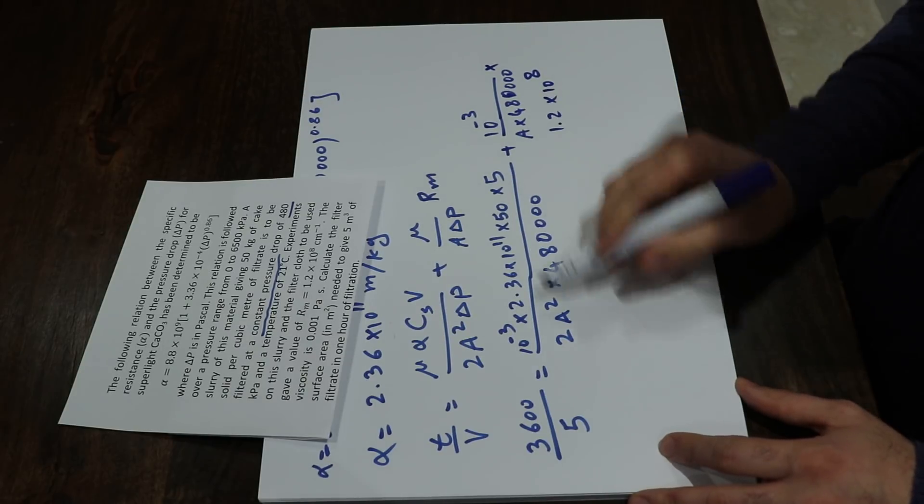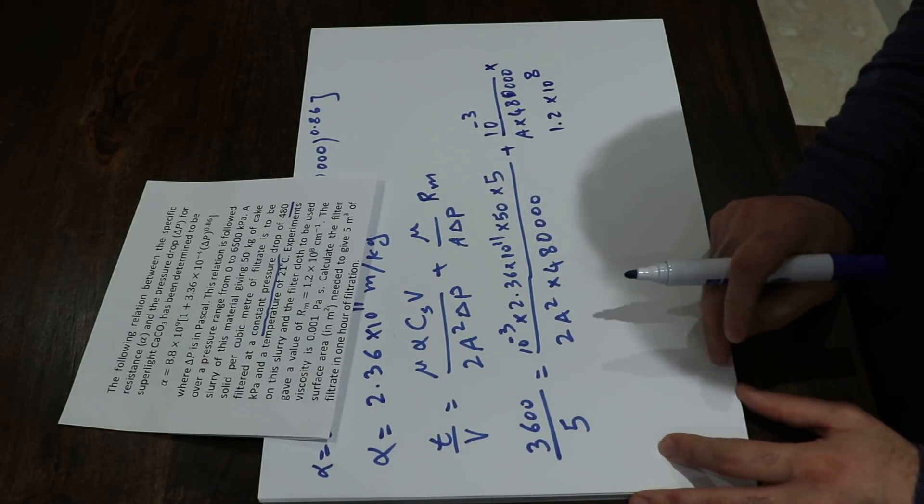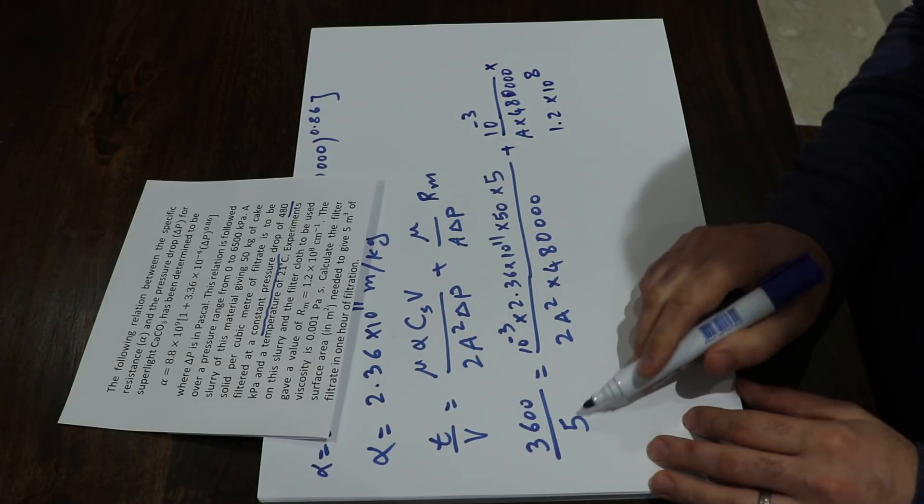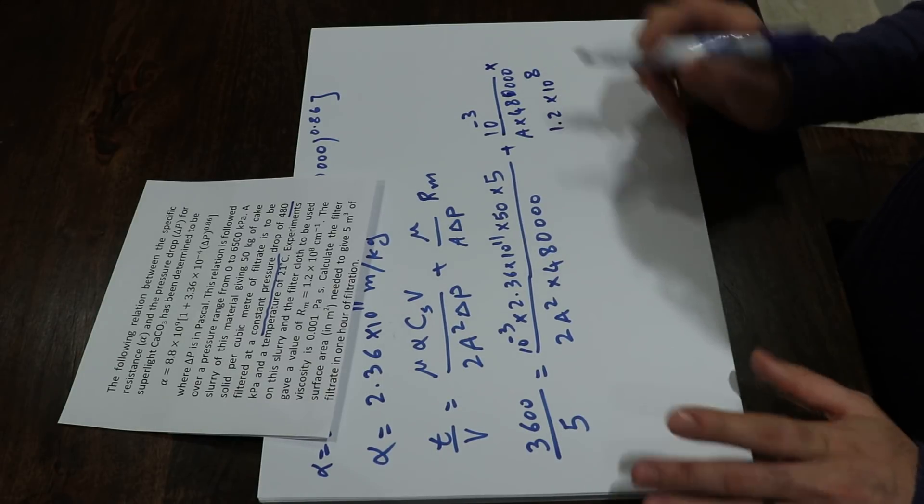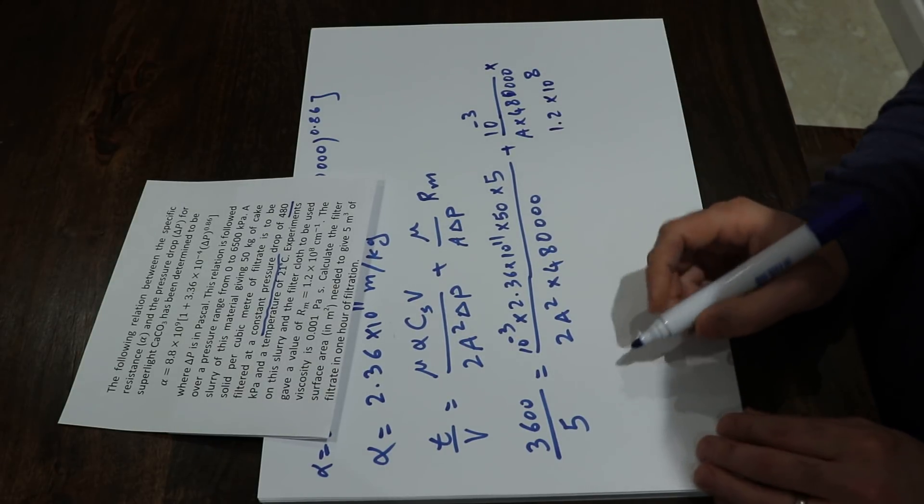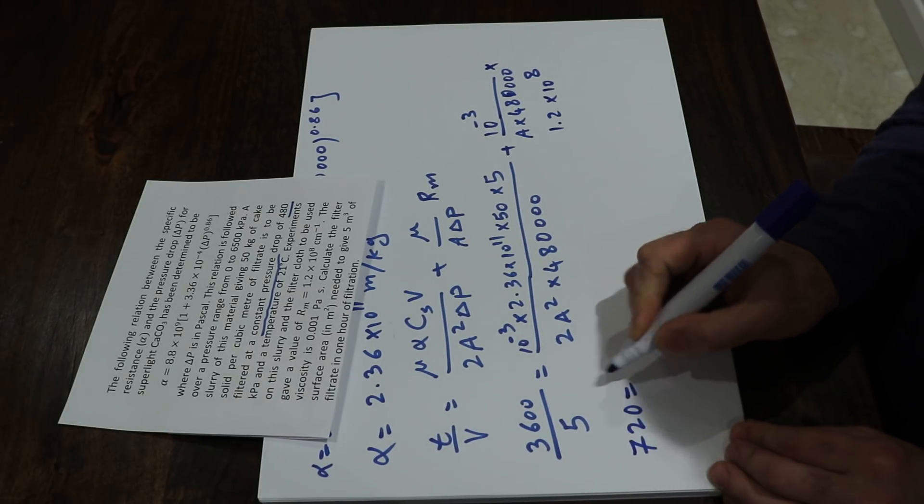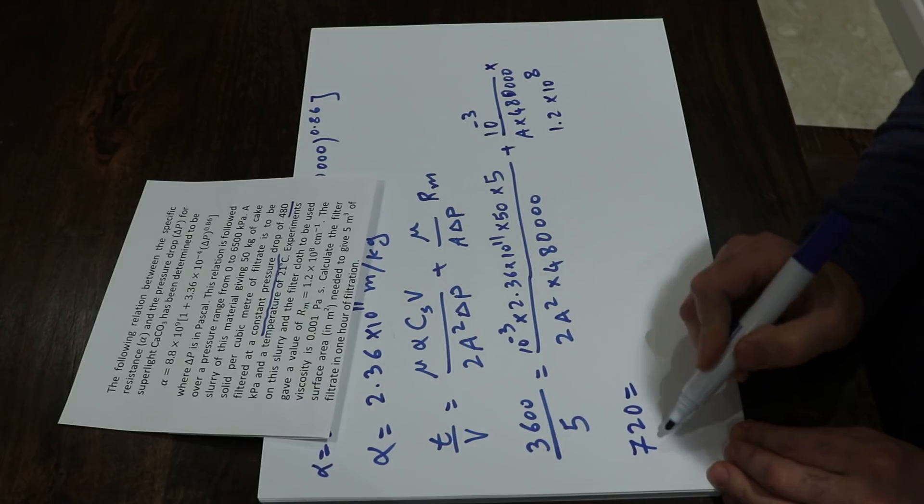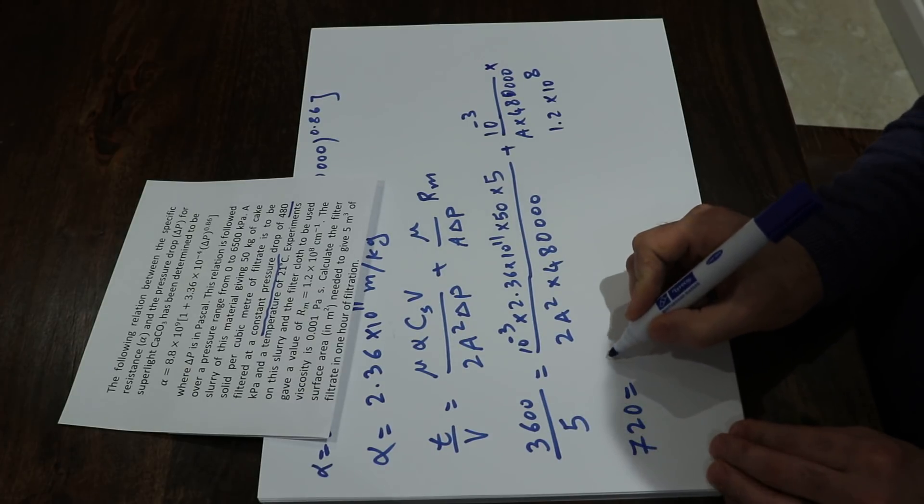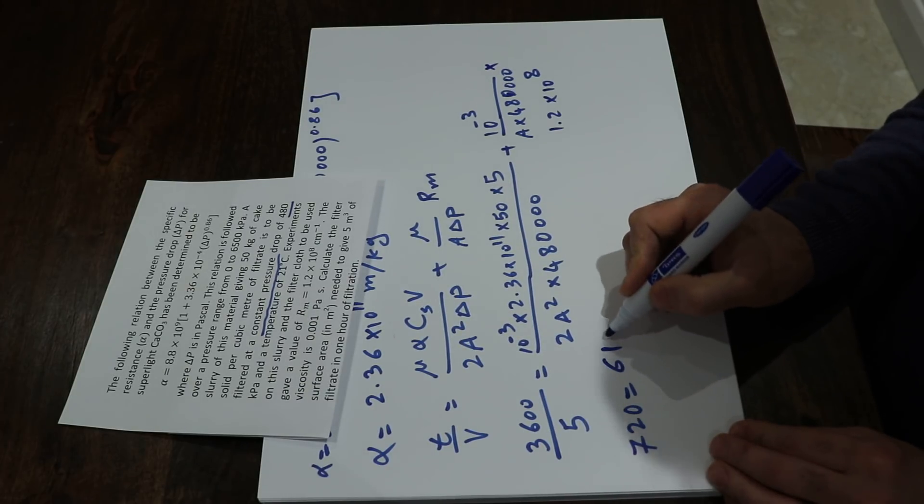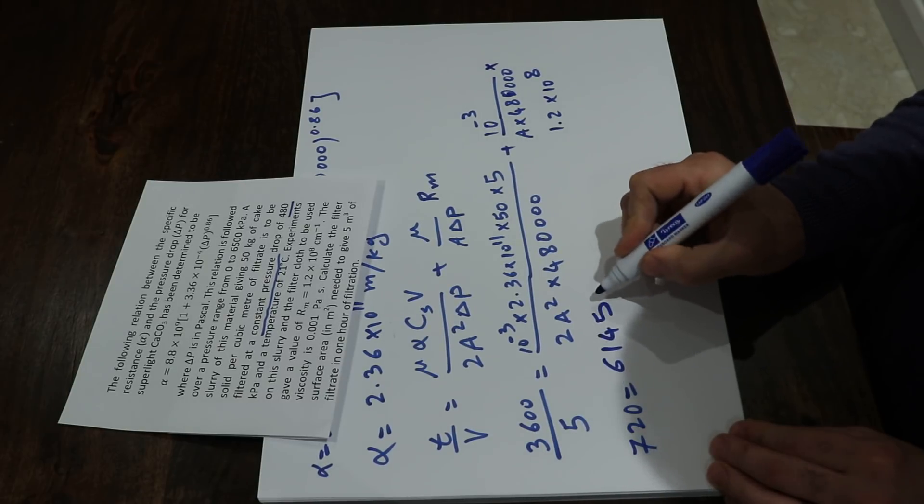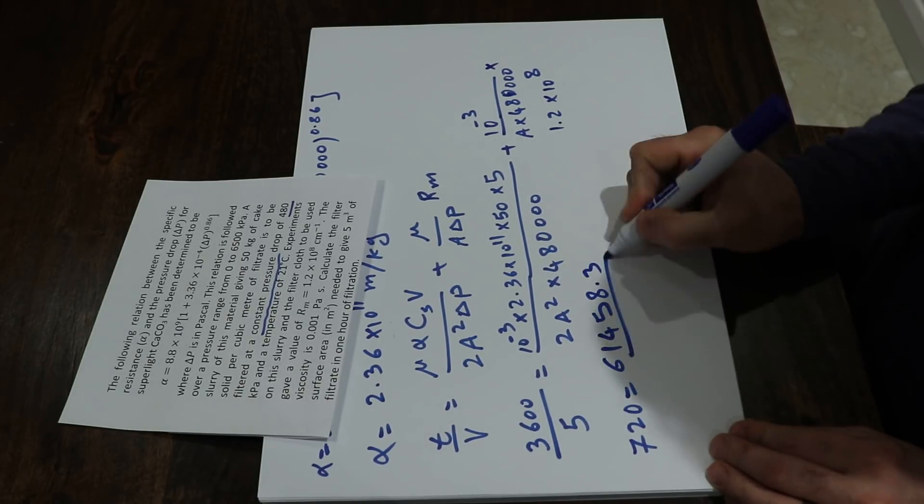So if you simplify this equation, if you do the calculation, that will be 720 (3600 divided by 5 is 720) will be equal to 61458.3 divided by A squared plus 25 divided by A.